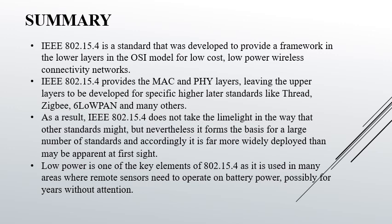To summarize, IEEE 802.15.4 is a standard that was developed to provide a framework in the lower layers of the OSI model for low-cost and low-power wireless connectivity networks. It provides the MAC and physical layers, leaving the upper layers to be developed for specific higher-level standards like Thread, ZigBee, ZigSlow, WPAN, and many others. As a result, IEEE 802.15.4 does not take the limelight in the way that other standards might, but nevertheless it forms the basis for a very large number of standards and is far more widely deployed than may be apparent at first sight. Low power is one of the key elements of 802.15.4, as it is used in many areas where remote sensors need to operate on battery power possibly for years without attention.